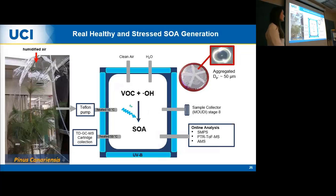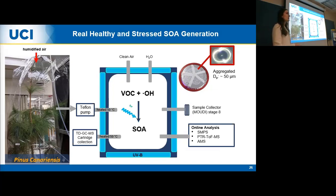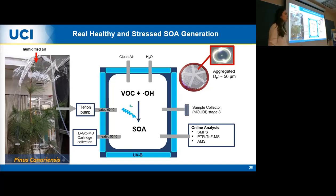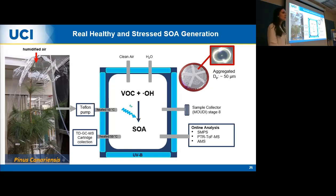To investigate real healthy and stressed effluent generation, we used the same chamber as before and generated a plant enclosure. We grew three-year-old Canary Island pines at the UCI greenhouse and hauled them to lab. To capture their VOCs, I constructed a two cubic meter Teflon enclosure. To prevent the plant from shutting off photosynthesis, we supplied humidified air not scrubbed of CO2. A Teflon pump actively pulled VOCs from the bag into our chamber. The bag was tied around the base of the tree trunk to exclude any air-soil interaction, so we sampled only from what came off the branches.